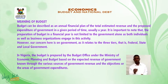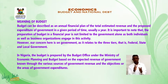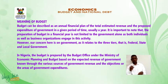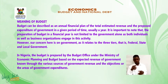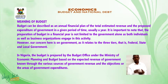Meaning of budget: A budget can be described as an annual financial plan of the total estimated revenue and the proposed expenditure of government in a given period of time, usually a year. It is important to note that preparation of a budget in a financial year is not limited to the government alone, as both individuals as well as business organizations engage in this activity.